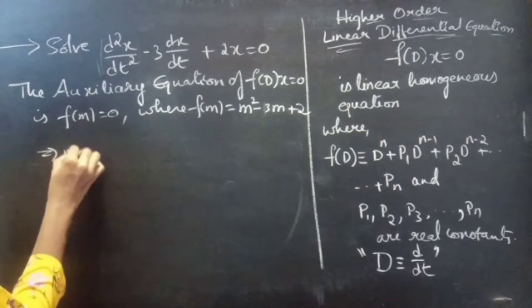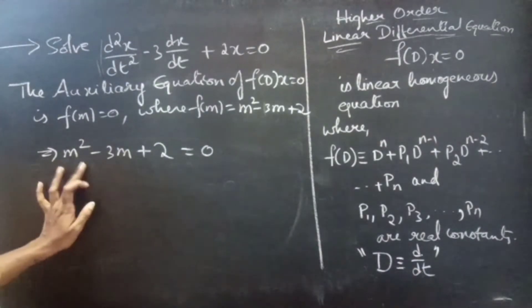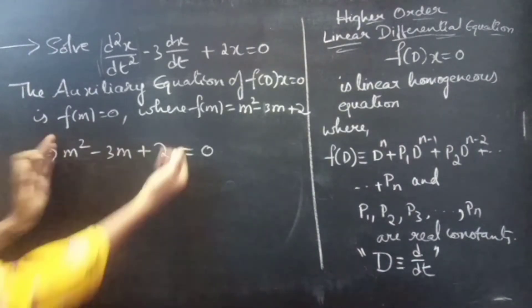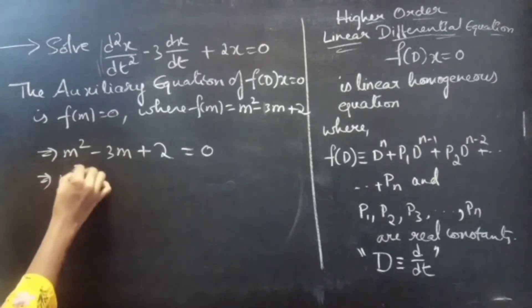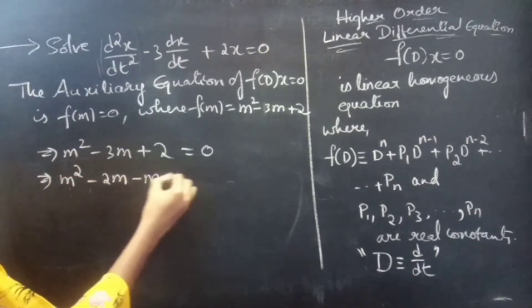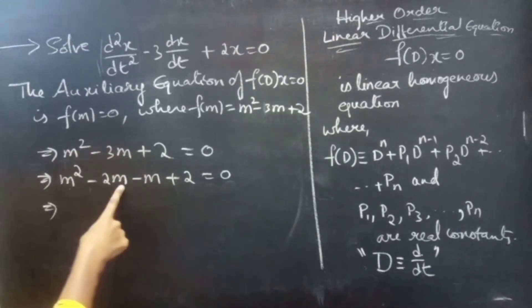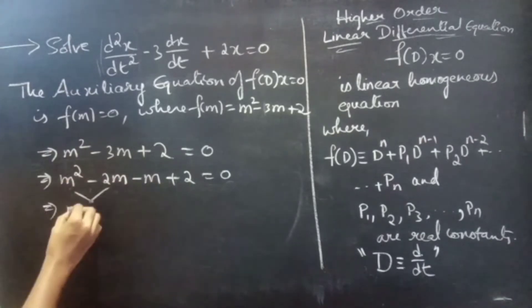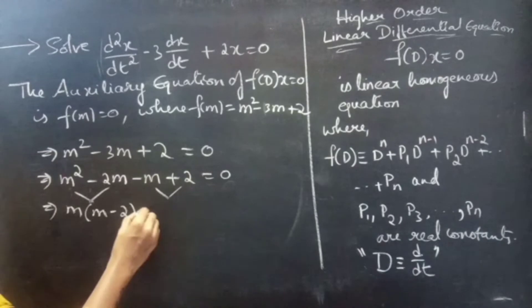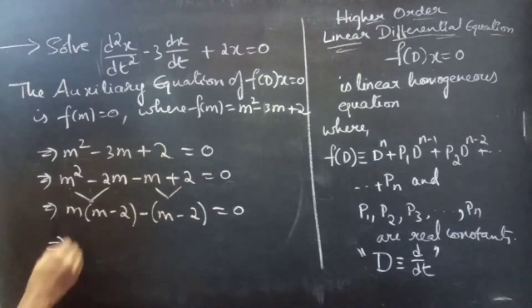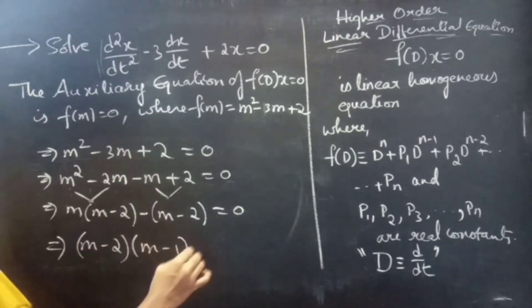The auxiliary equation is m² minus 3m plus 2 equals 0. Factorize by splitting minus 3m as minus 2m minus m: m² minus 2m minus m plus 2 equals 0. Take m common from the first two terms to get m(m minus 2), then take minus common from the next two terms to get minus(m minus 2) equals 0.